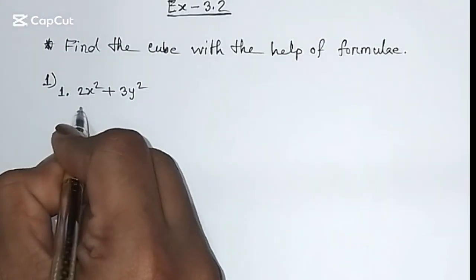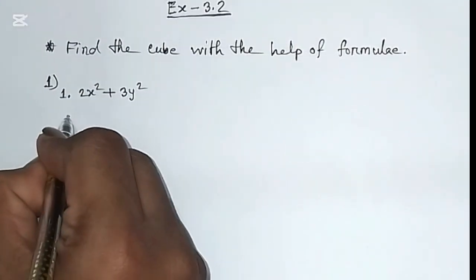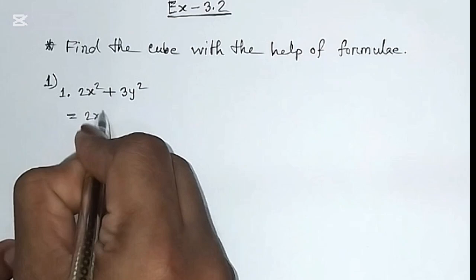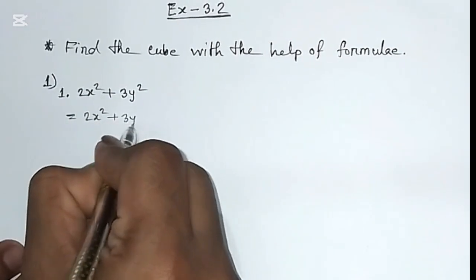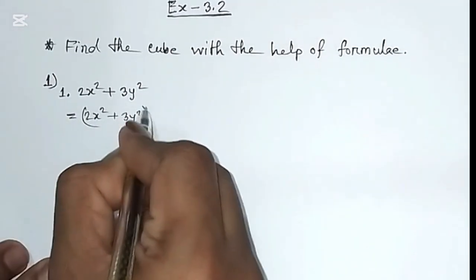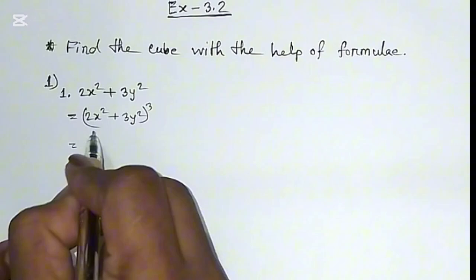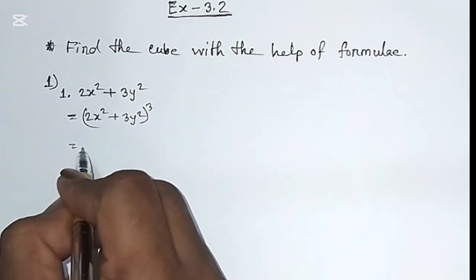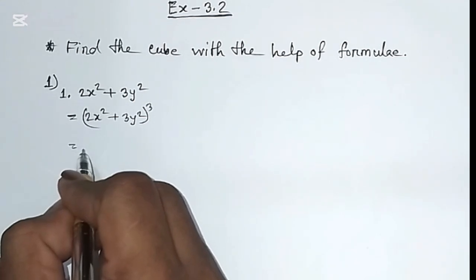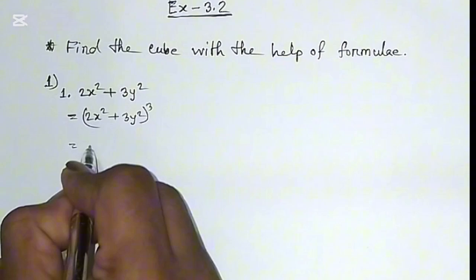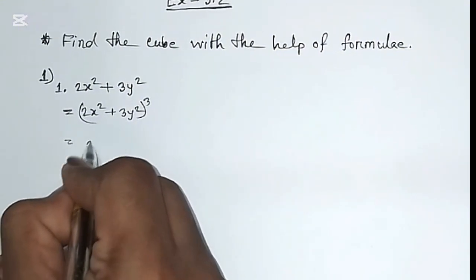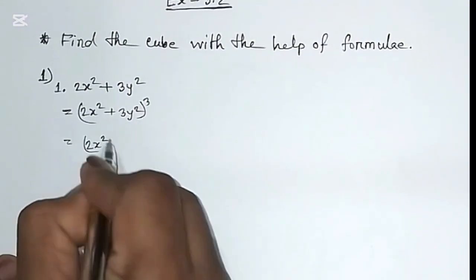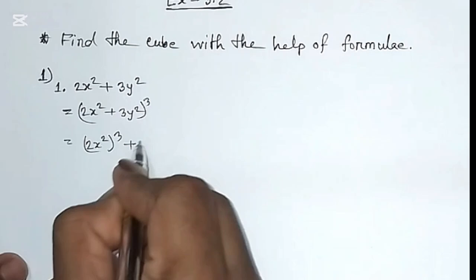Question number 1: (2x² + 3y²)³. Here, 2x² is considered as 'a' and 3y² is considered as 'b'. Now we will apply the formula of (a + b)³. Here a means 2x² whole cube plus...